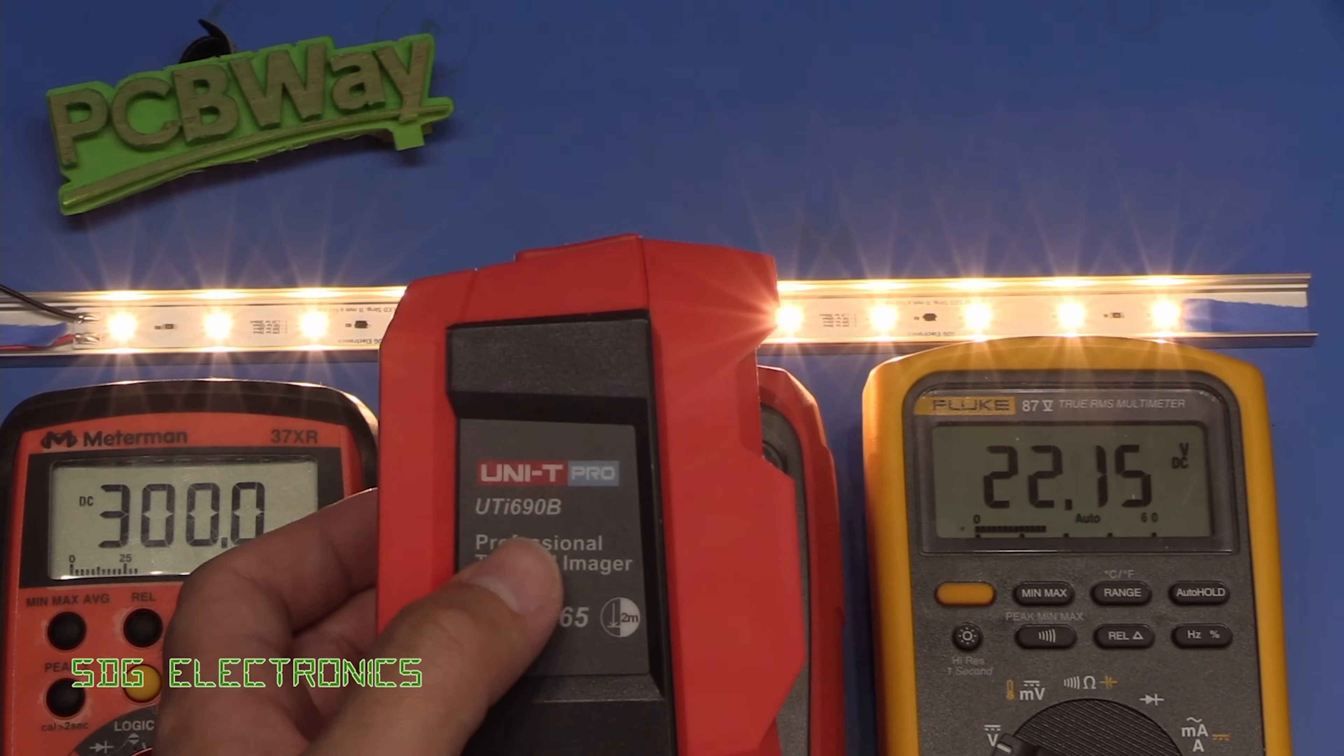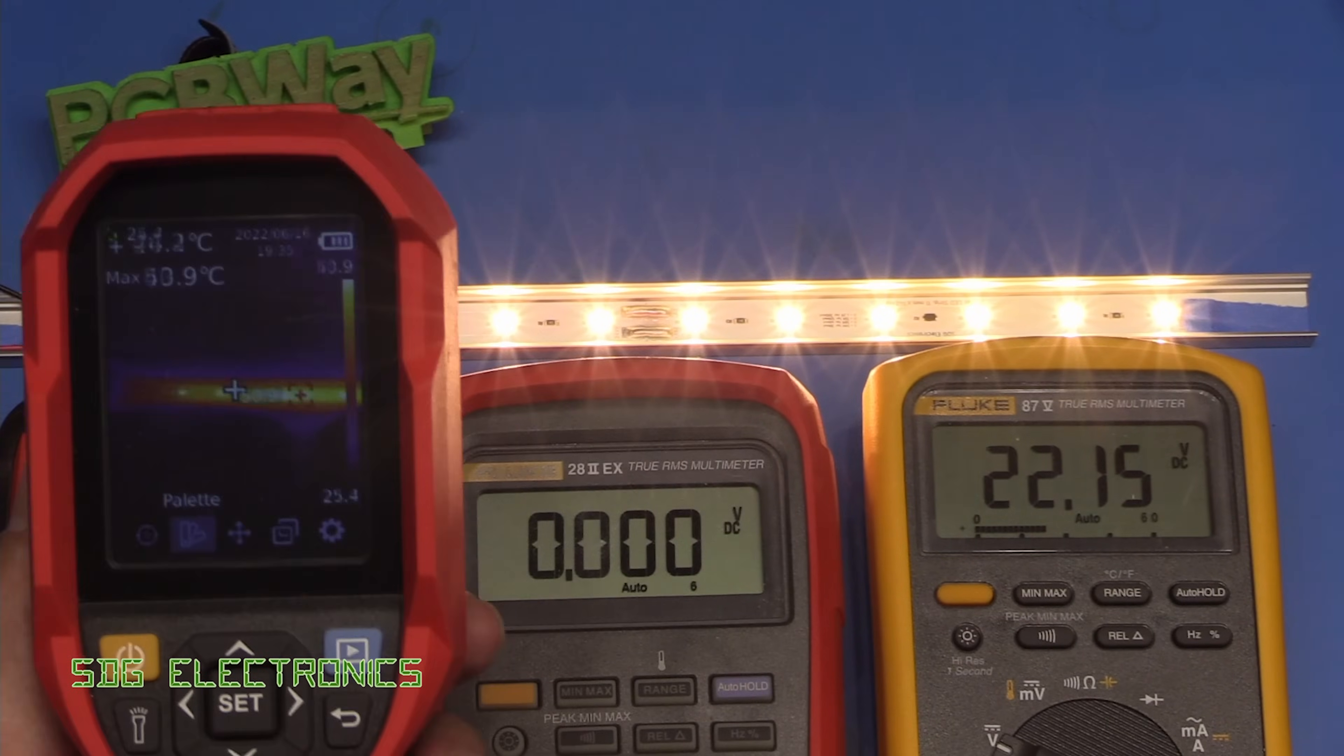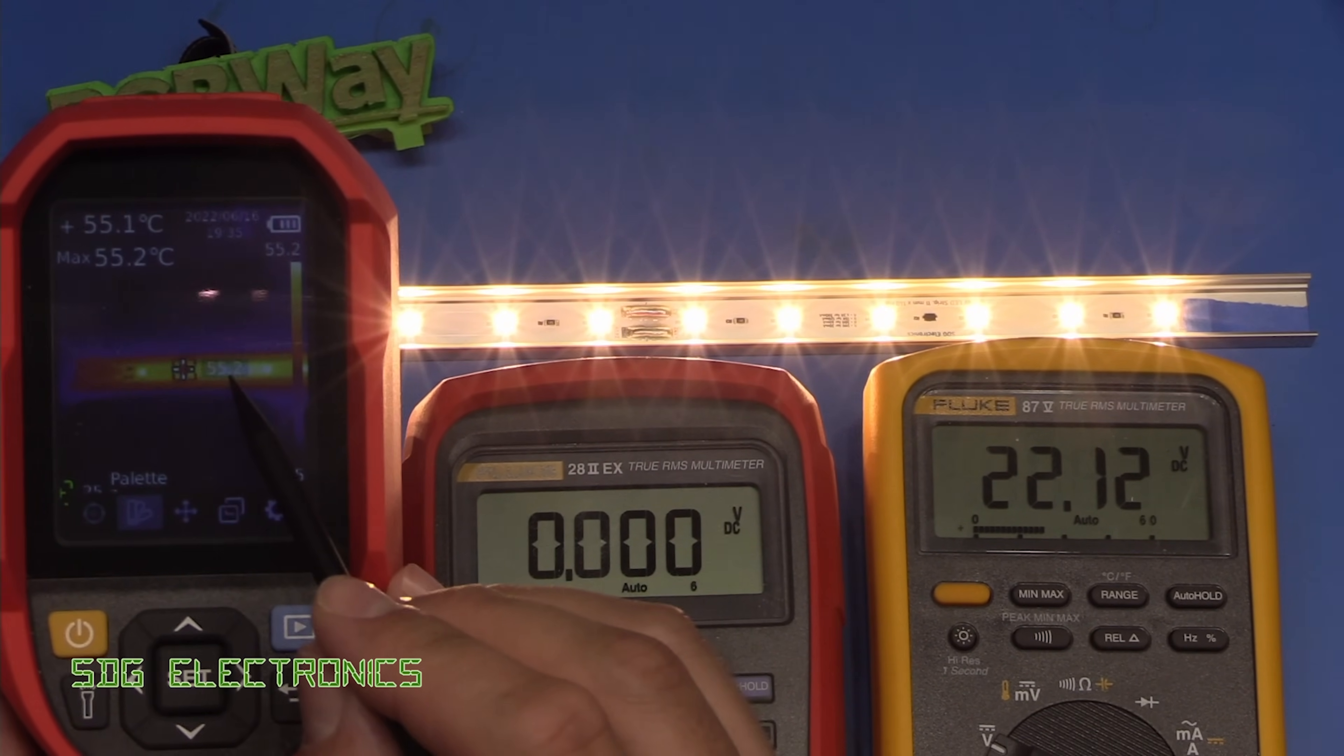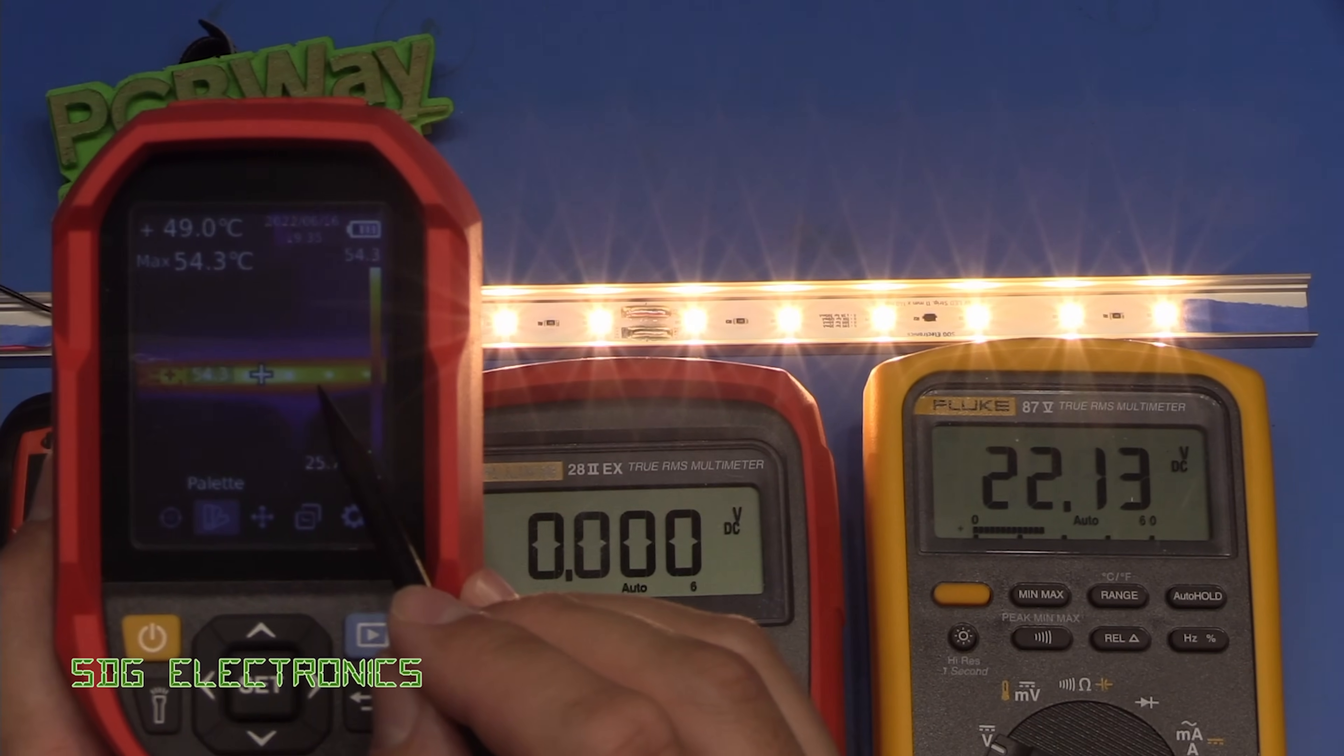So we're going to use our Unity Pro UTI 690B and if we have a look at the screen here which hopefully you can see we've got the three LEDs across here and if we point the crosshair at one of them here